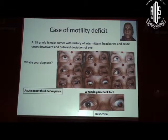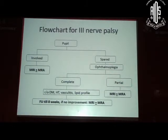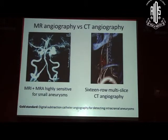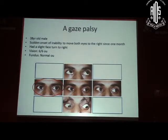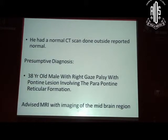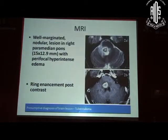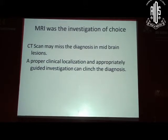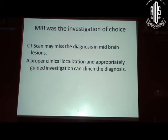For motility defects, in acute onset third nerve palsy, always look at the pupil. If there is anisocoria, imaging is required. If the pupil is spared and the palsy is partial, you may be seeing a developing third nerve palsy for which MRI would be indicated. If it is complete with systemic problems, you can follow up, and if there is no improvement, progression, or worsening, plan imaging. If the pupil is involved, you are more likely to suspect an aneurysm as the cause. We had a patient with gaze palsy who had a normal CT done outside — that's why CT may not help us always. He had a normal CT with right gaze palsy. The CT didn't pick up the brainstem region, so we advised an MRI which showed a lesion in the brainstem diagnosed as tuberculosis. The patient was treated and recovered his gaze. The investigation of choice was MRI — the CT gave misleading information. If you suspect a lesion, localize it and do the appropriate investigation.